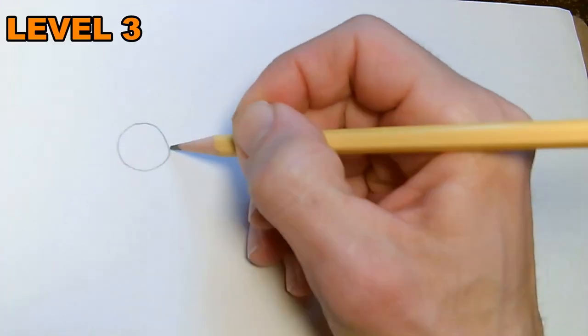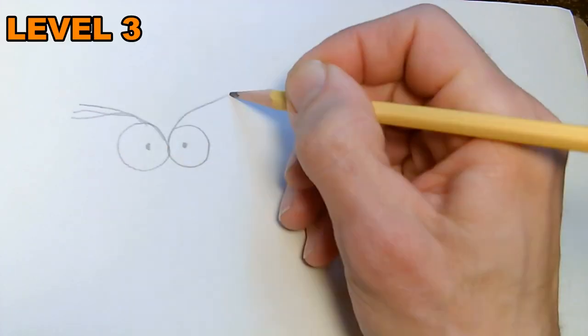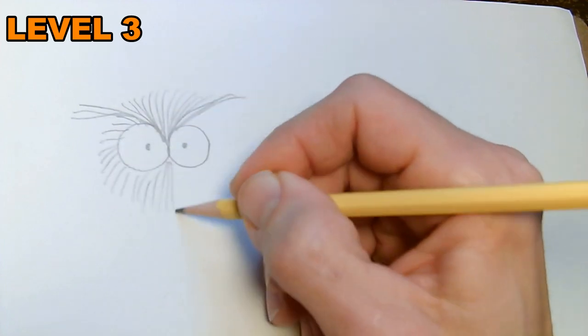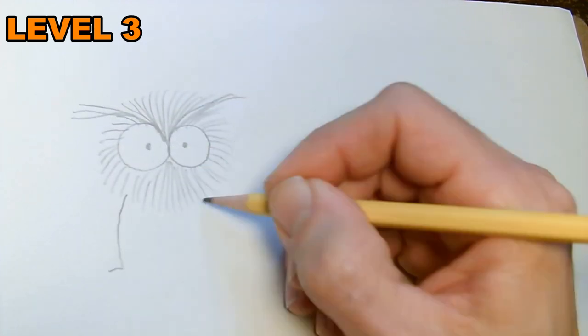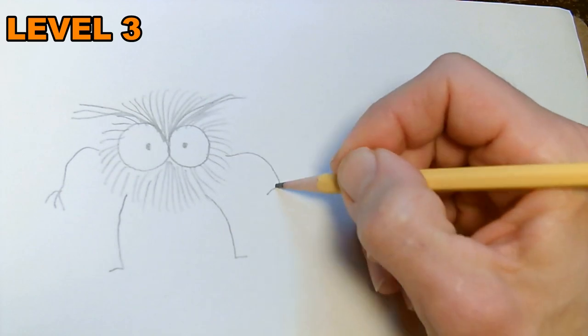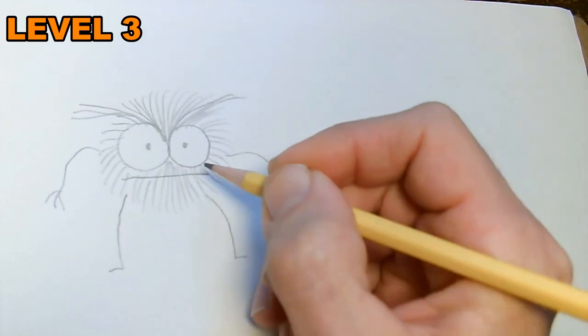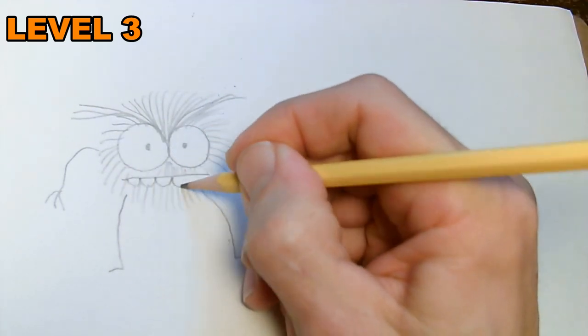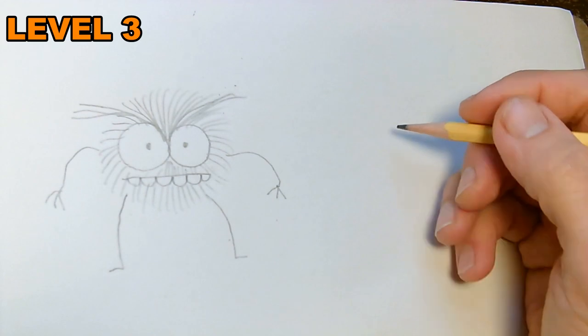Anyhow, level three monsters: we have the eyes, we'll do the eyebrows, we'll bring the fur around. The difference with a level three monster—can have legs and arms like any other monster, but it also has this line here. We'll erase the fur, we'll add in some teeth, and we have a mouth.